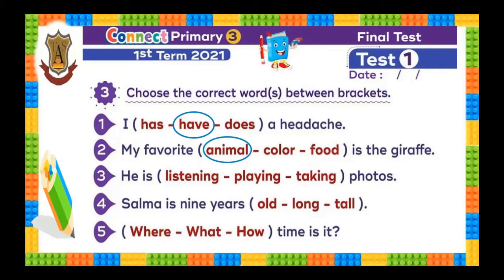Number four: Salma is nine years old. Number five: What time is it?